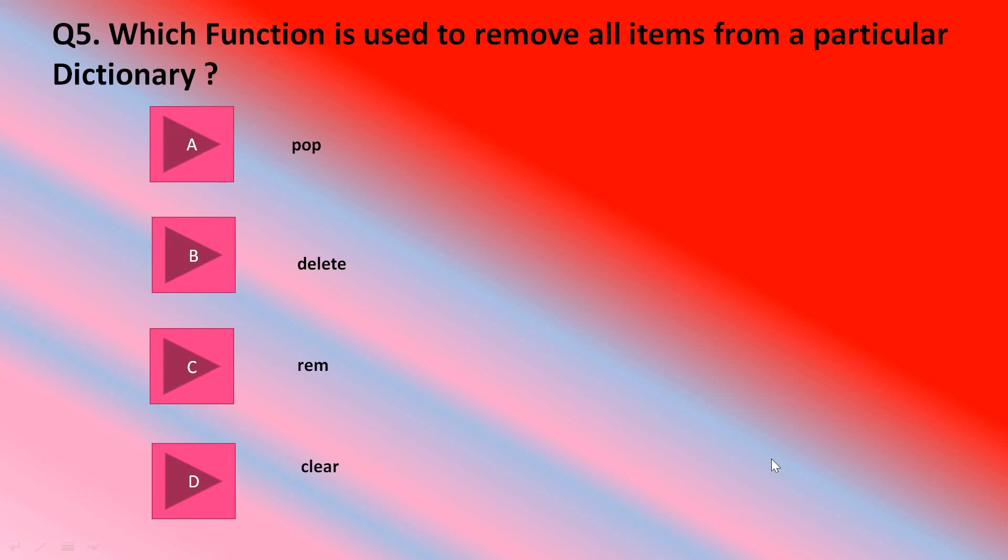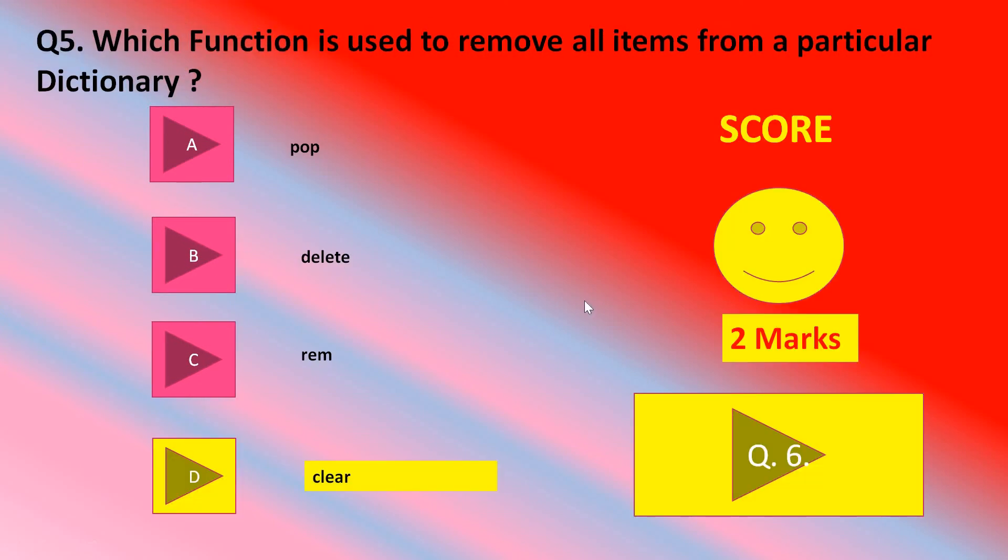Which function is used to remove all items from a particular dictionary? A is pop, B is delete, C option is rem for removing, and D is clear. Should I try this one, D part? D part. Yes. Clear is the correct answer. Clear is the function which is used to remove all items from a particular dictionary. Again two marks. If your answer is wrong, don't give marks to yourself. Keep noting your marks.